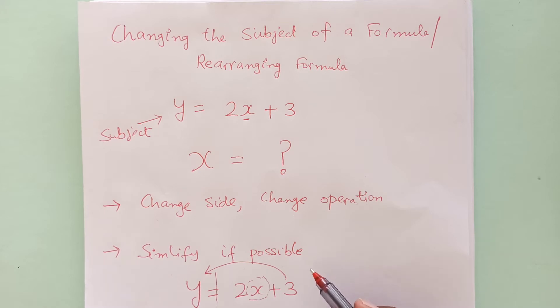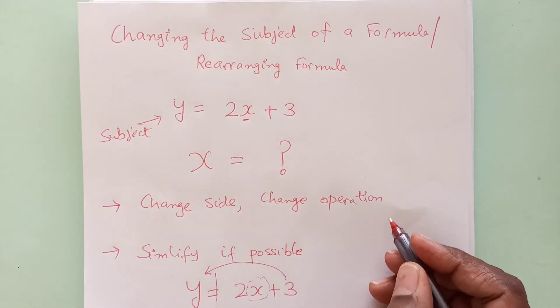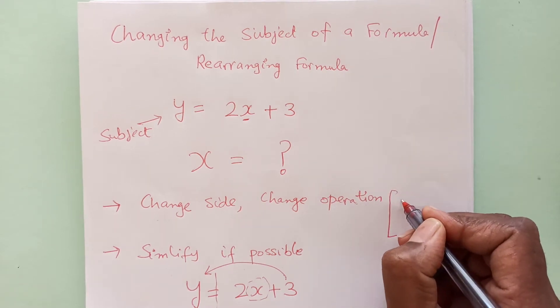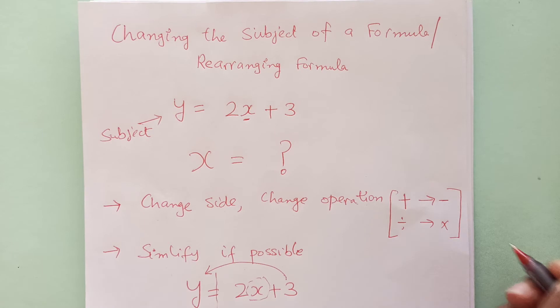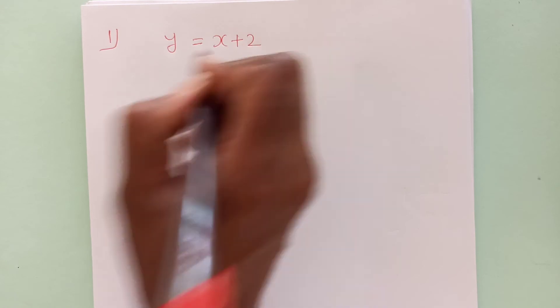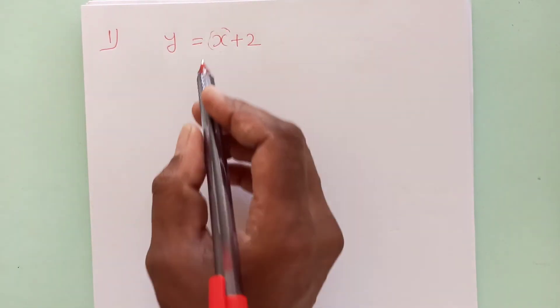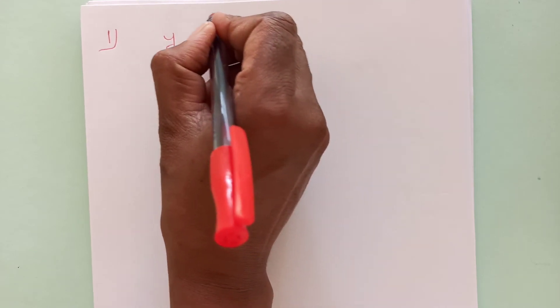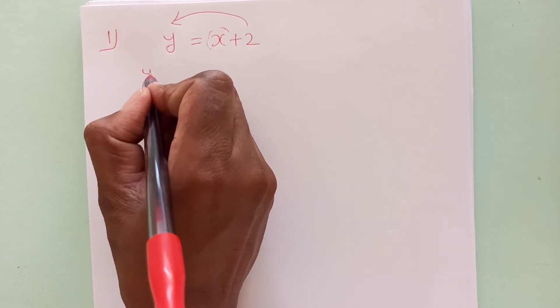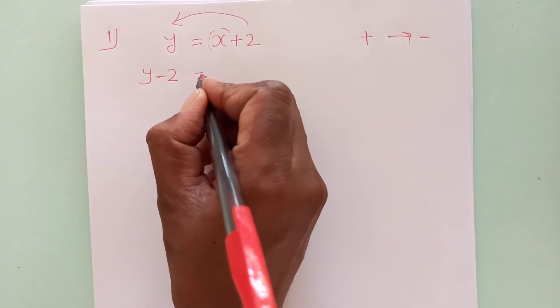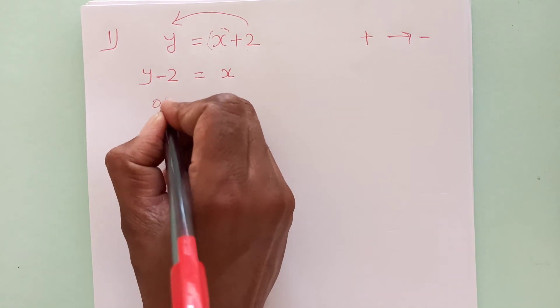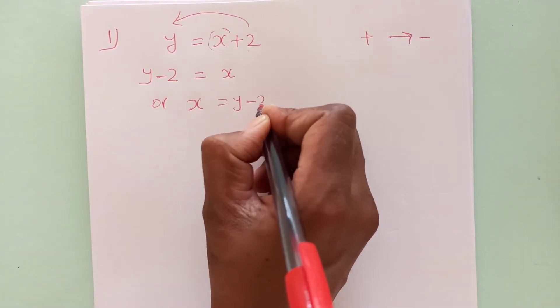To change the subject we need to change sign, change operation, and then simplify if possible. For example, if we have y equals to x plus 2 and we want to make x the subject, we are going to shift 2 to the other side. As it is positive here, on the other side it will become negative. So y minus 2 equals to x, or x equals to y minus 2. Now x is the subject.